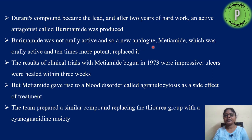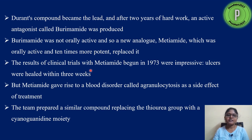So they identified another analog known as metiamide. They optimized the lead molecule by changing functional groups, and metiamide was found to be 10 times more potent and orally active. Metiamide replaced burimamide, and clinical trials of metiamide began in 1973. The ulcer healed within three weeks.